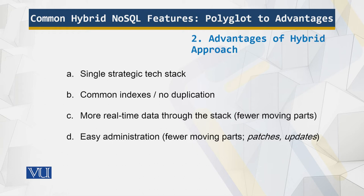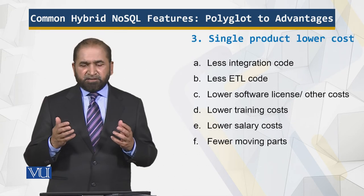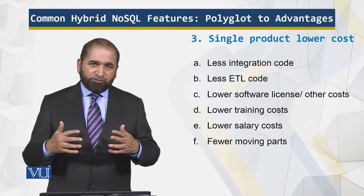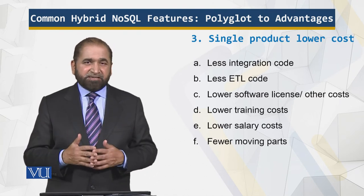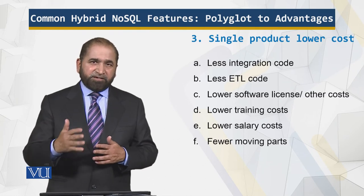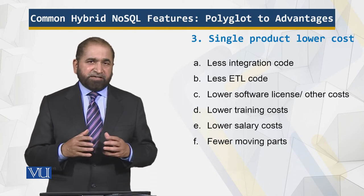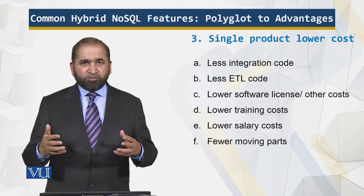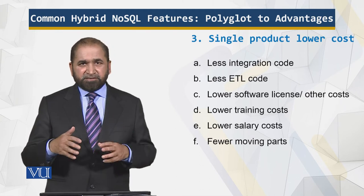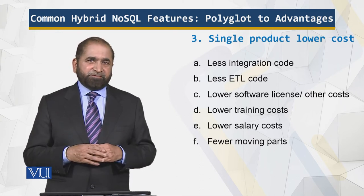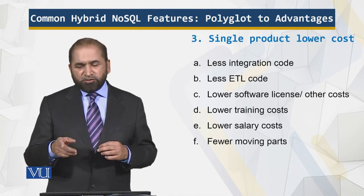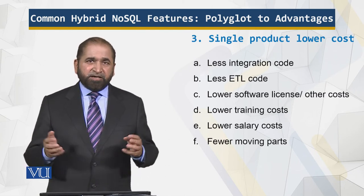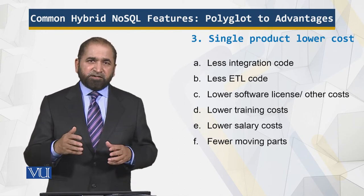With a single product, the costs are lower. There are less integration costs, because you don't have to integrate different things from different vendors — that has already been integrated by the vendor from which you buy the product. ETL — extract, transform, load — takes humongous cost. When you have a single product, you don't have to connect things or bring different things into a uniform format. So there is less ETL coding, lower software license and other costs. Instead of buying multiple softwares and paying multiple license fees, you pay an upfront fee for a single license.